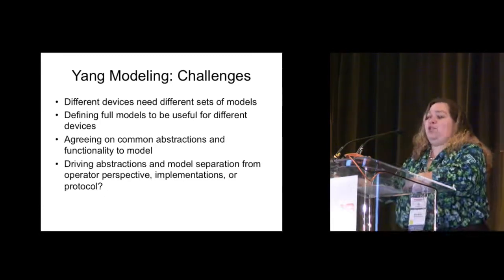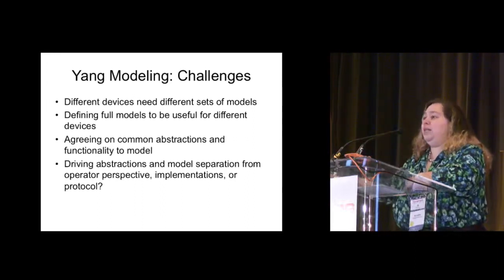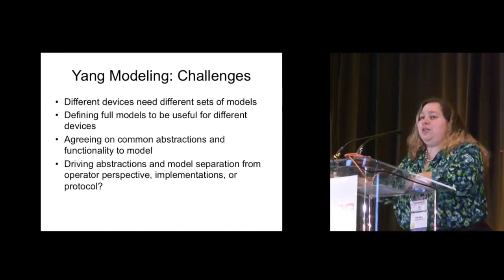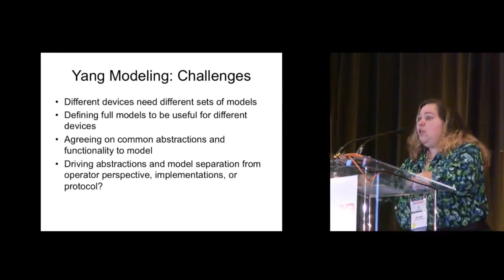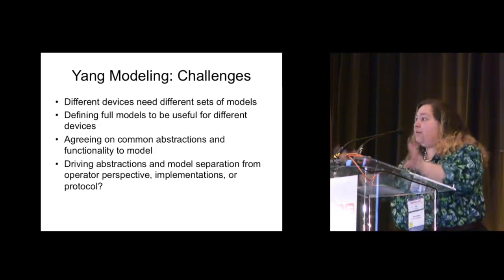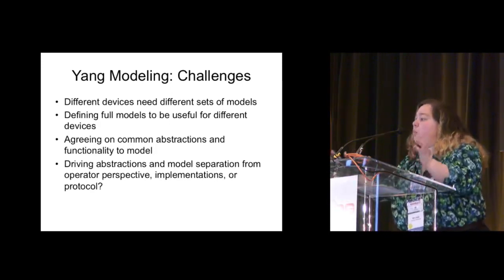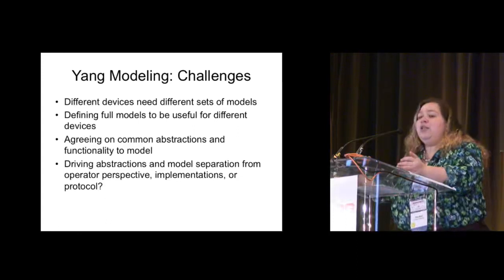Common abstractions — trivial case: router ID. Do you model it as a uint32, do you model it with dotted quad? What's a common convention? If we don't think about the trivialities, you end up with unnecessary divergence. One of the tricks here is trying to avoid that unnecessary divergence.